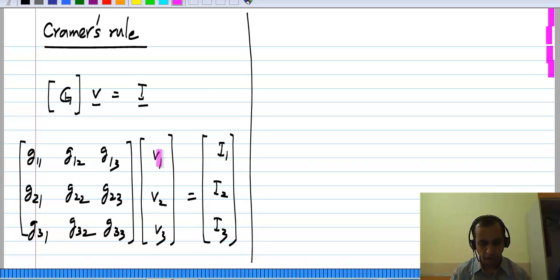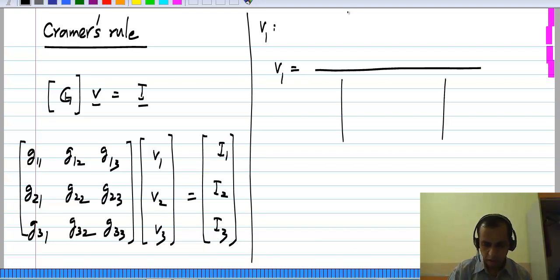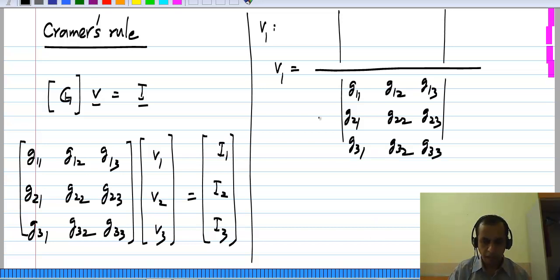Now this Cramer's rule is convenient when you are not looking to solve for the vector completely. So let's say you want only one of them, let's say V1. What you do is V1 turns out to be the ratio of two determinants and in the denominator we have the G matrix itself: G11, G12, G13, G21, G22, G23, and G31, G32, G33. And in the numerator that matrix is basically this G matrix, but with one of the columns replaced by the right hand side. In this case we want V1, so the first column is replaced by the right hand side vector and the remaining two are the same as before.